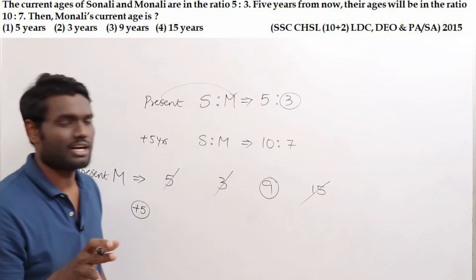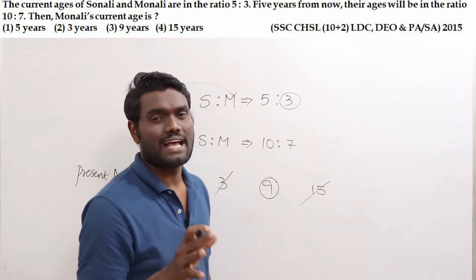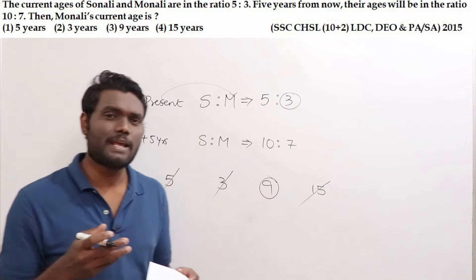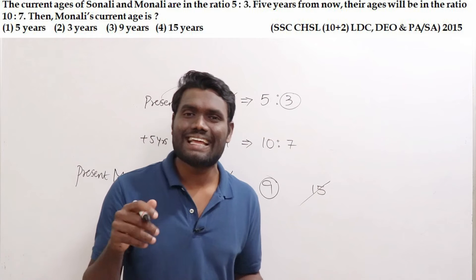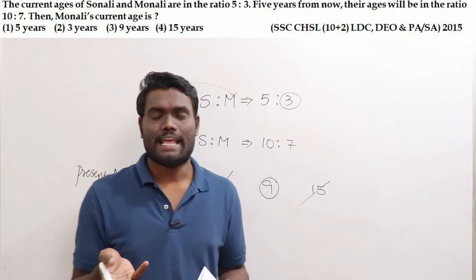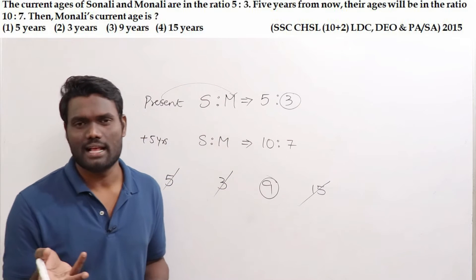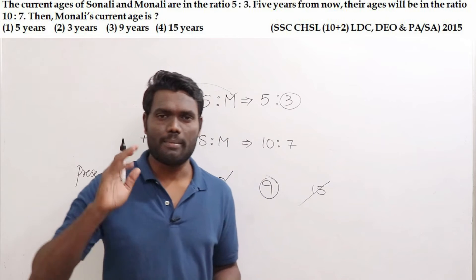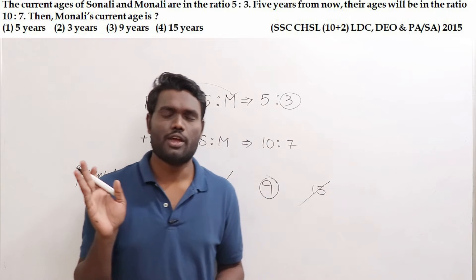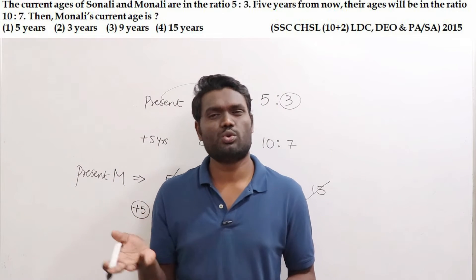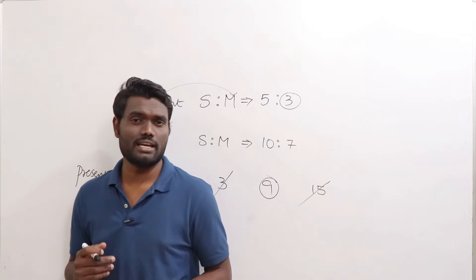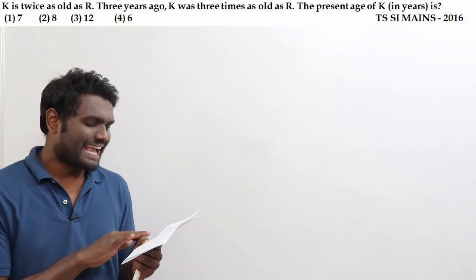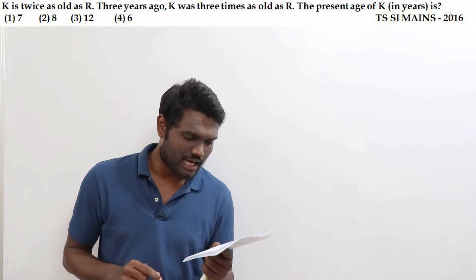Just by using common sense you can mark these answers by looking at the question itself — no calculation needed. These are questions asked in various competitive examinations. If you use option verification, you get the answer in just 2 to 3 seconds, whereas doing full calculations consumes a lot of time. Let us look at the next example.